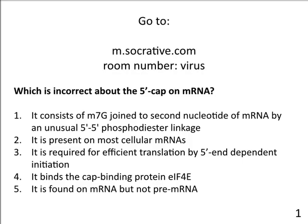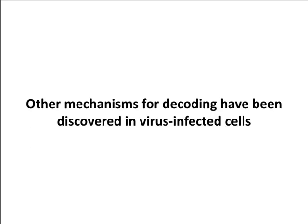So which is incorrect about the 5' cap on mRNA? Most of you got this. The incorrect statement is: 'It's found on mRNA but not pre-mRNA.' The cap is actually added co-transcriptionally — after about 20 or 30 bases of mRNA are made in the nucleus by RNA Pol II, the cap is added. So it's on pre-mRNA before it's spliced, and it's thought to be important for the splicing reaction.